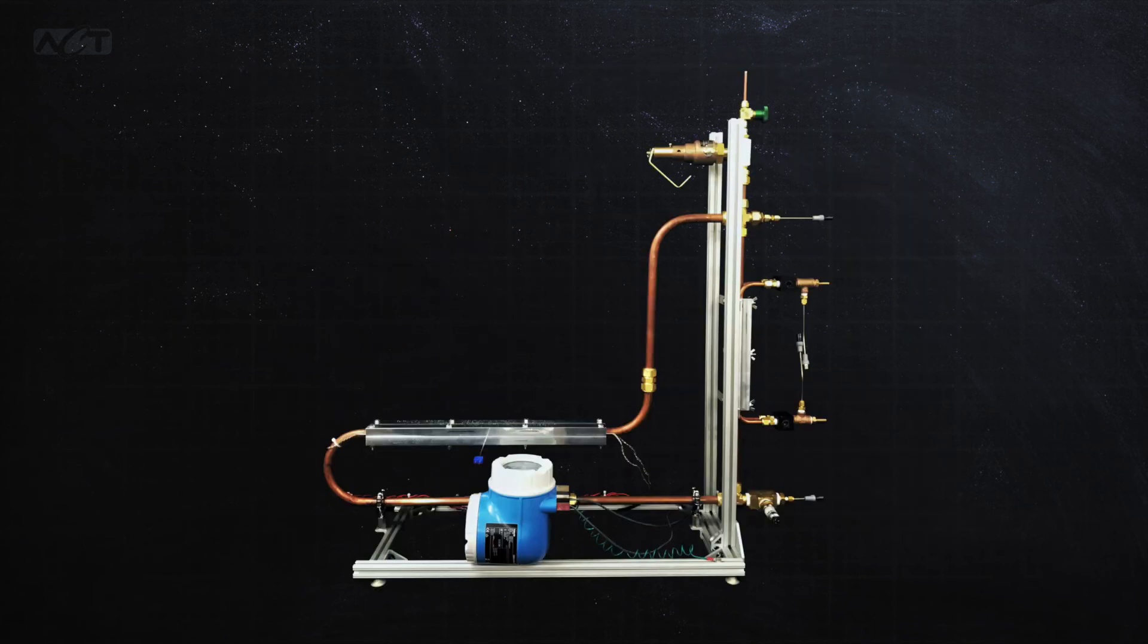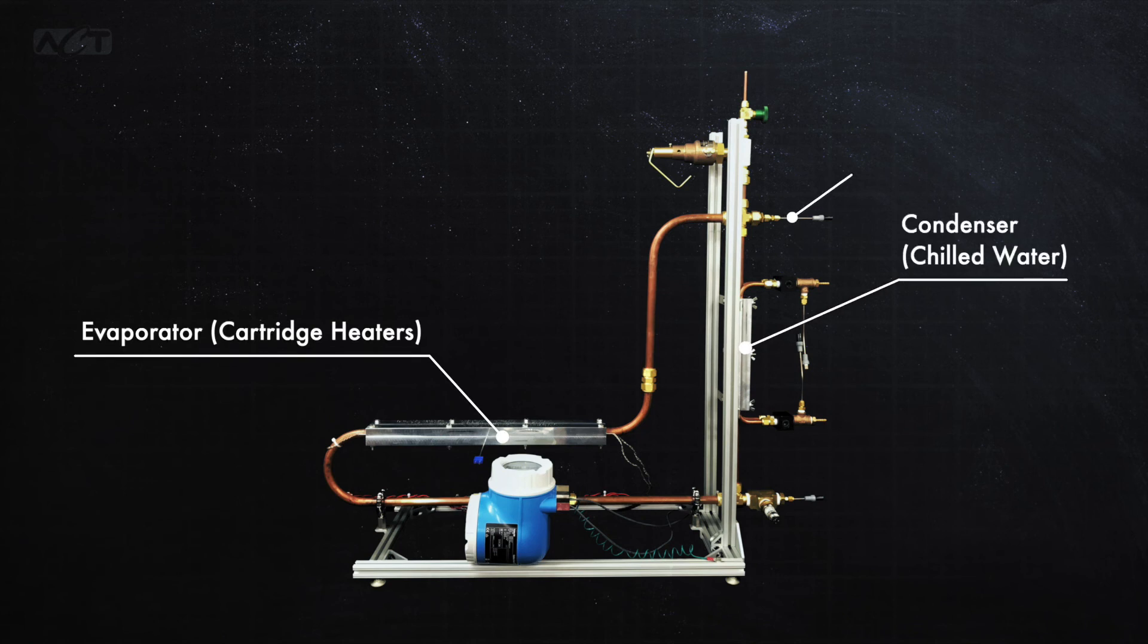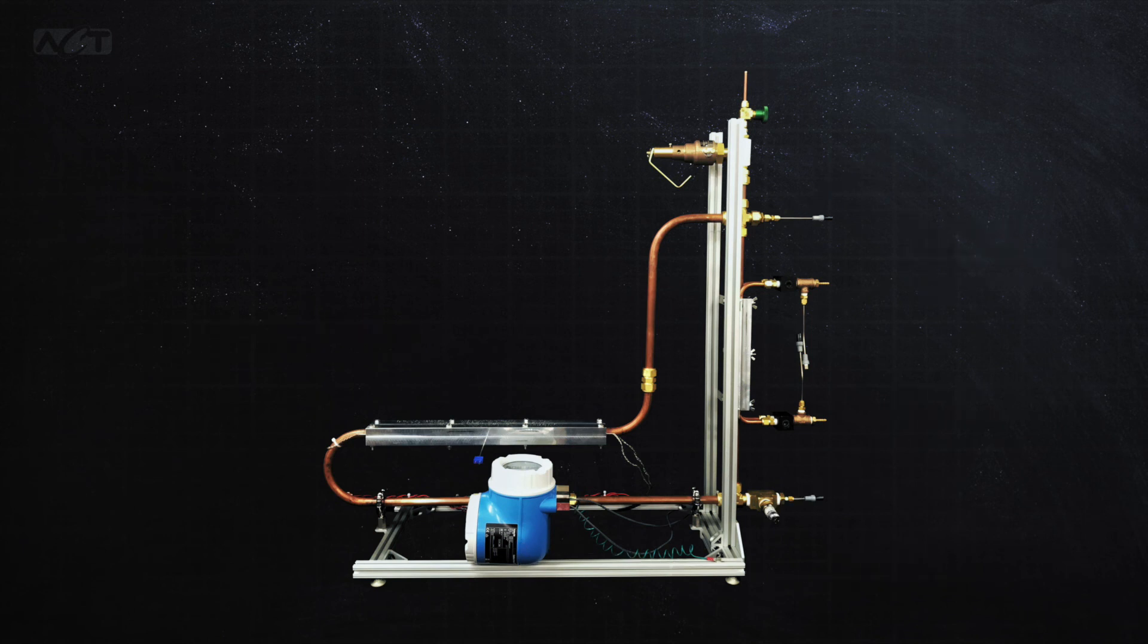The model was used to design the lab-scale loop thermosyphon, which was constructed, instrumented, and filled with water as a working fluid. This loop was heated by cartridge heaters and cooled by chilled water. We used some RTDs for temperature measurements, an absolute pressure transducer for pressure measurement, and an electromagnetic flow meter to record the flow rate.